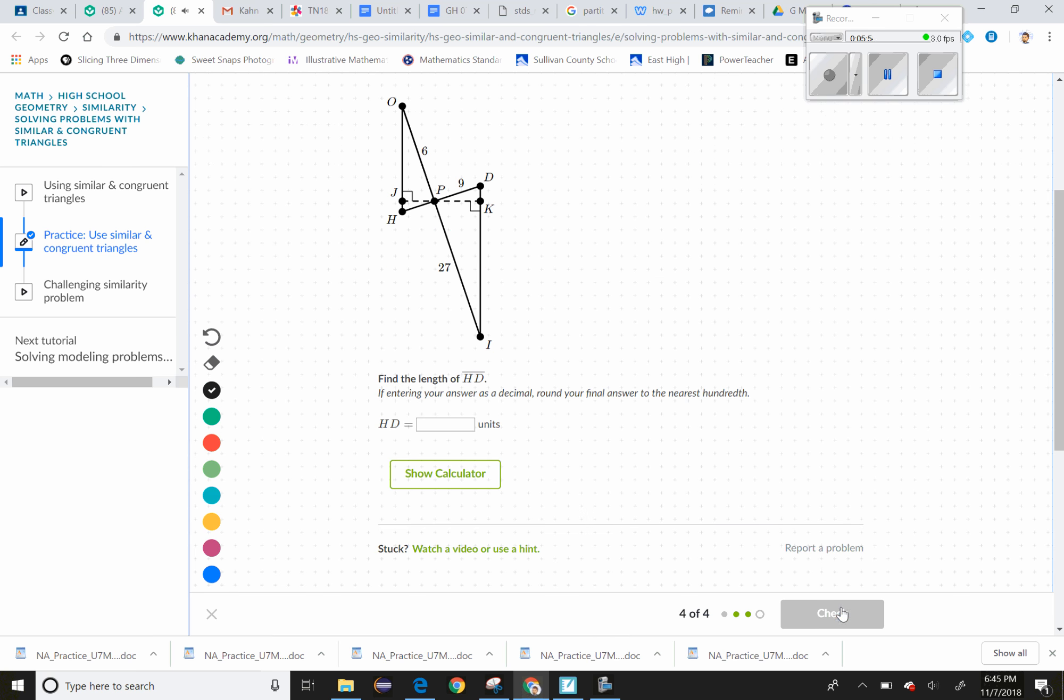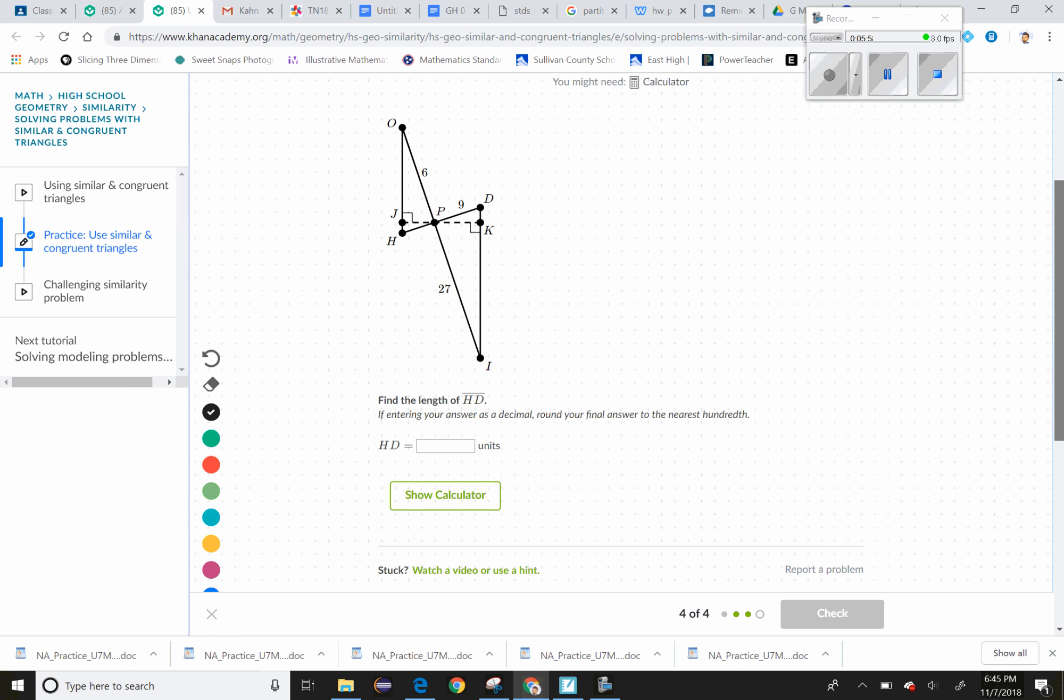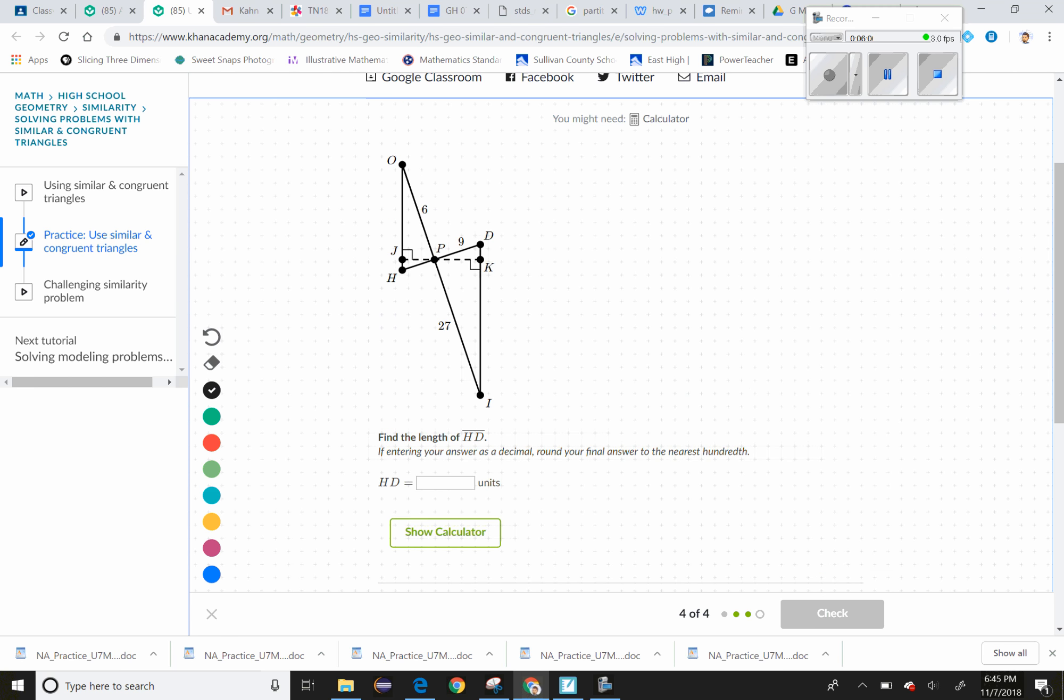And then the last one—again we're working with similar right triangles here, and they've got these altitudes drawn in. They want the length of HD.